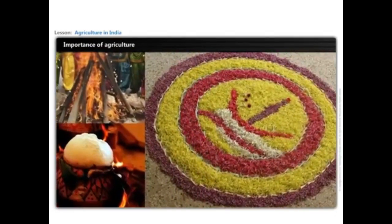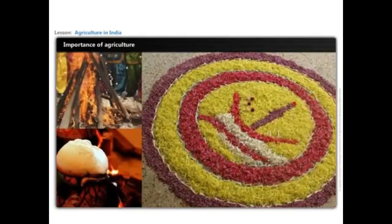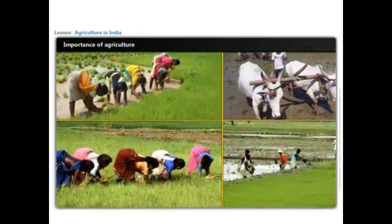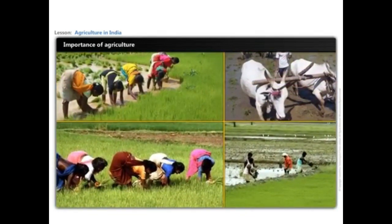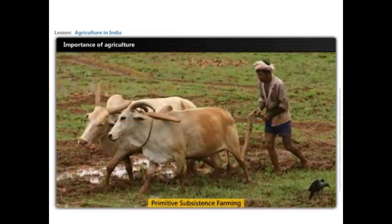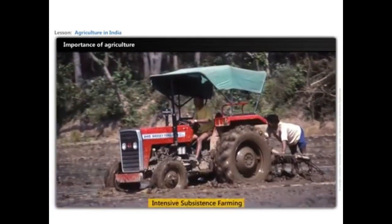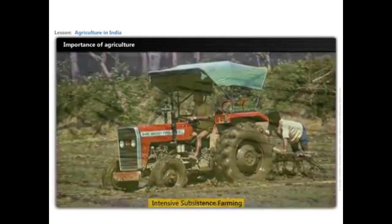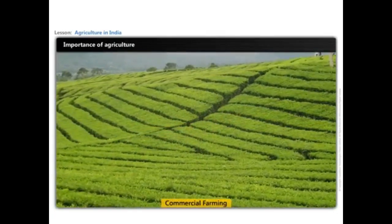Agriculture is not only an important occupation but also a way of life and culture of the people of India. Most Indian customs and festivals are observed in consonance with agriculture. Various farming systems are practiced in India, such as primitive subsistence farming, intensive subsistence farming, and commercial farming, which includes plantation.